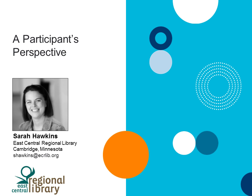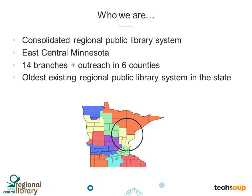Thank you, Jennifer. East Central Regional Library is a consolidated regional public library system in East Central Minnesota. Our claim to fame is that we are the oldest existing regional public library system in the state — formed in 1959 by a joint powers agreement between six counties. We have 14 branches and outreach in those six counties, and geographically one end of our region is more than 100 miles from the other. The size of our communities ranges greatly — from the outskirts of the Twin Cities suburbs all the way north to very small rural towns with populations of less than 400.